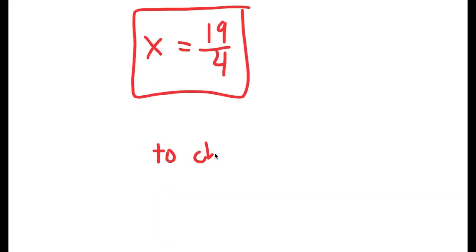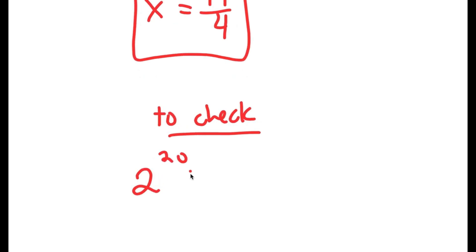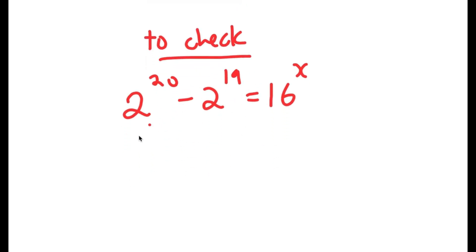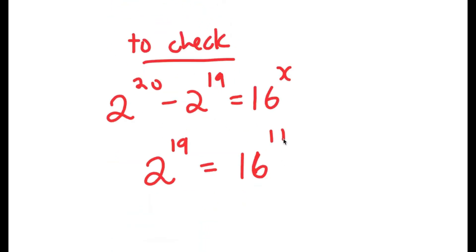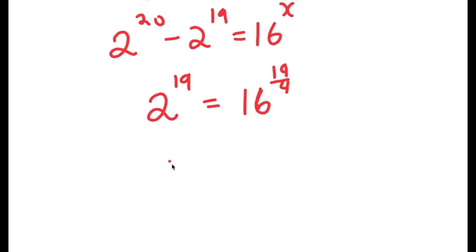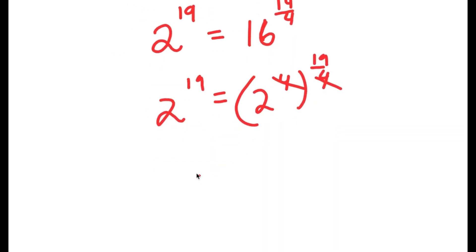To check: the original equation was 2^20 minus 2^19 equals 16^x. We already know 2^20 minus 2^19 equals 2^19. So we get 2^19 equals 16 to the power of 19 over 4. Since 16 equals 2^4, we have 2^4 to the power of 19 over 4, and the 4s cancel, giving 2^19 equals 2^19. Confirmed.